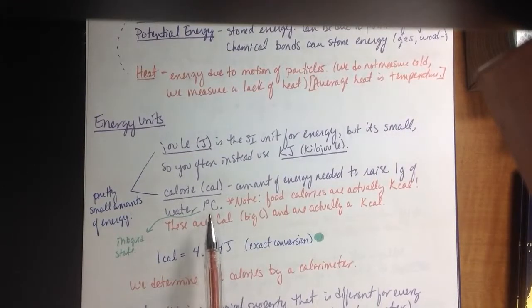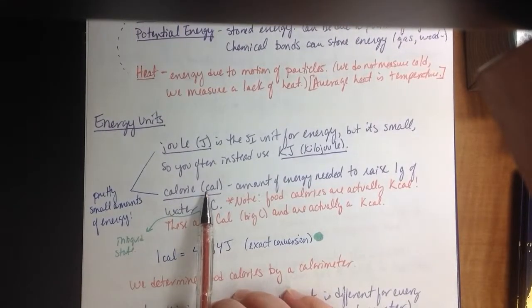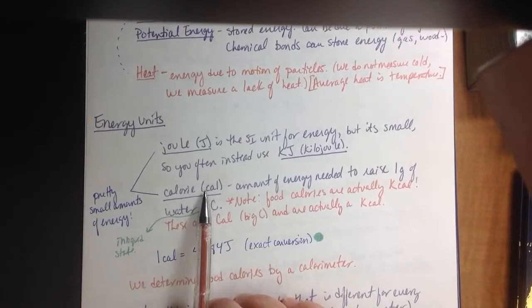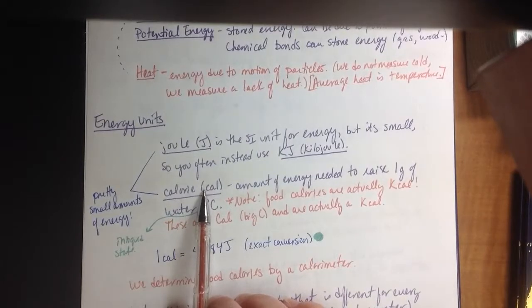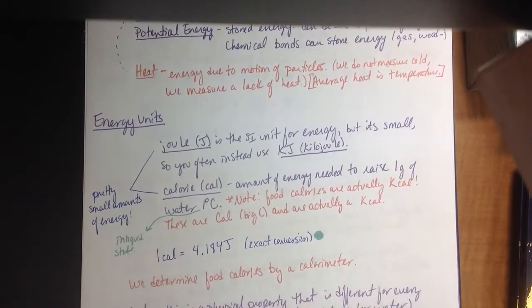Instead, what you're used to talking about when you talk about calories is food calories is a capital C-A-L, which is the same thing as a kilocalorie. So those are so much larger than these that they're actually a thousand times higher, so a kilocalorie. That's what you look at when you look on the back of a cereal box or whatever it may be.